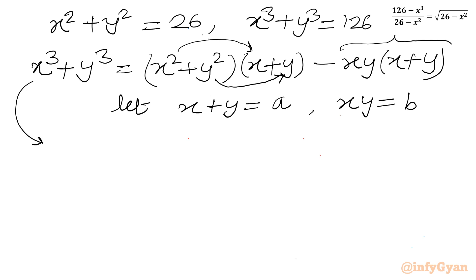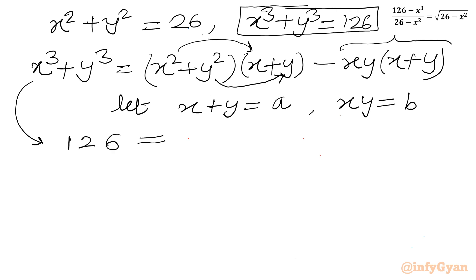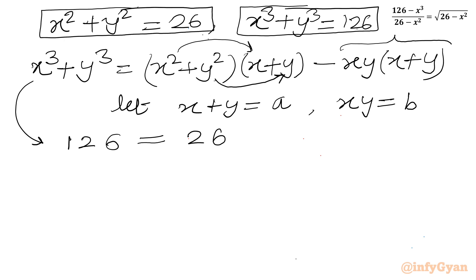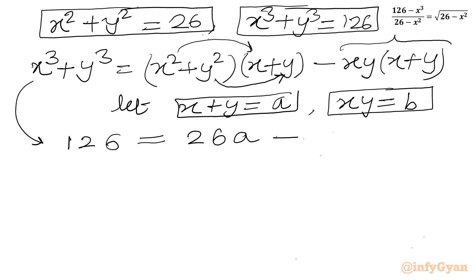So I can write x³ plus y³ equals 126, and substitute: 126 equals (x² plus y²)(x plus y) minus xy(x plus y), which becomes 26 times a minus b times a, or 26a minus ab.